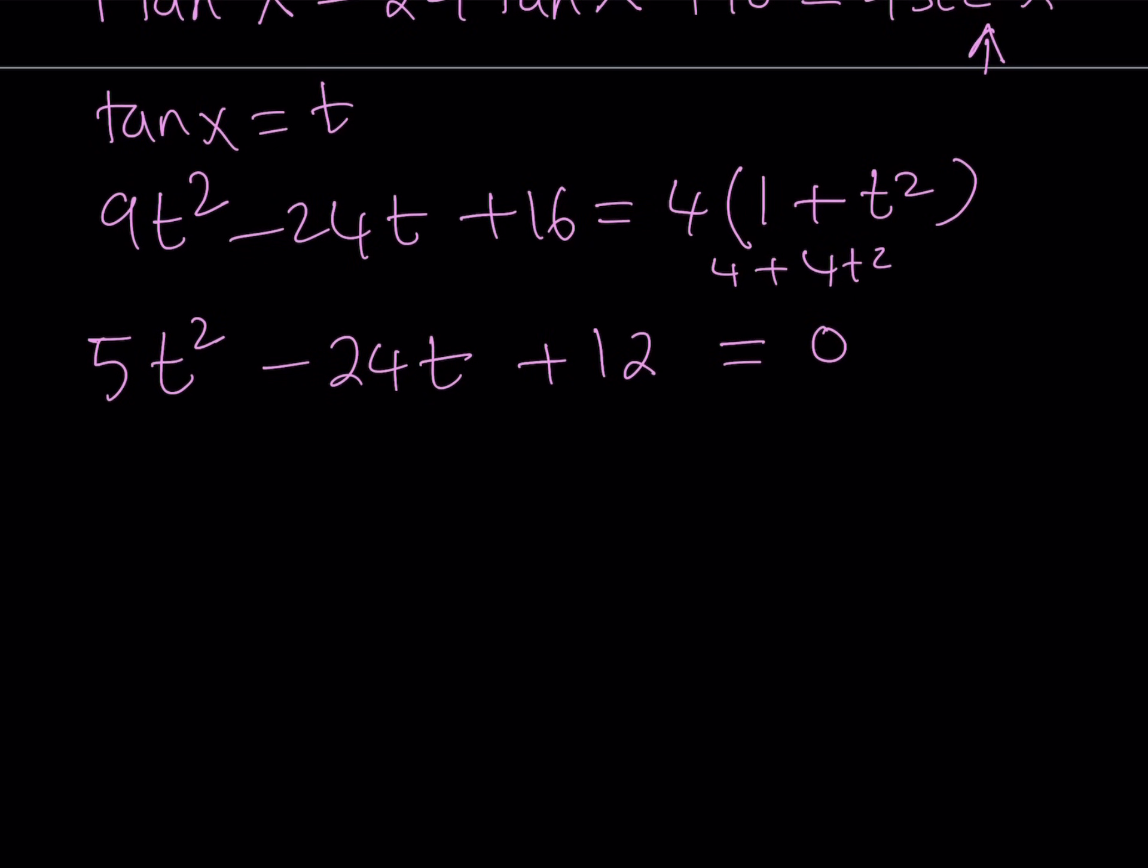From here, I'll be getting 4 plus 4t squared. If you subtract 4t squared, you get 5t squared. And then minus 24t. Now here, 16 minus 4 is going to give us positive 12. So this is going to be my quadratic equation in t or tangent x. Let's go ahead and solve it using the quadratic formula.